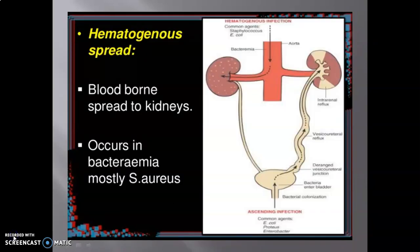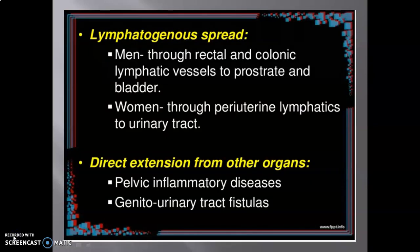In hematogenous spread, blood-borne spread to the kidney occurs mostly in bacteremia, mainly S. aureus. In lymphatogenous spread, in men it occurs through rectal and colonic lymphatic vessels to the prostate and bladder; in women through periuterine lymphatics to the urinary tract. Direct extension from other organs involves pelvic inflammatory disease and genitourinary fistula.